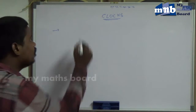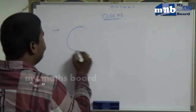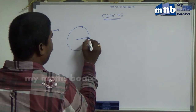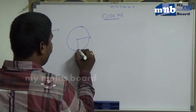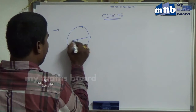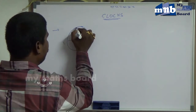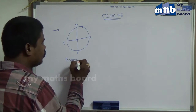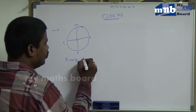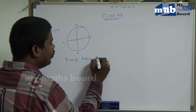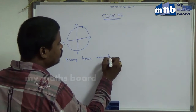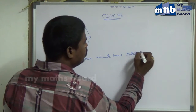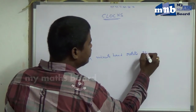Next thing, in the clock, 9 and 12. So every hour, the minute hand rotates 360 degrees.